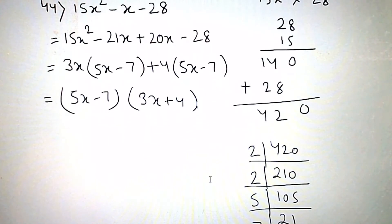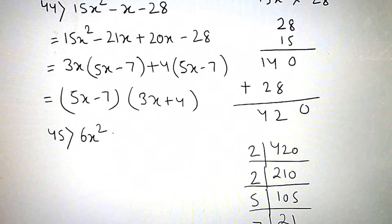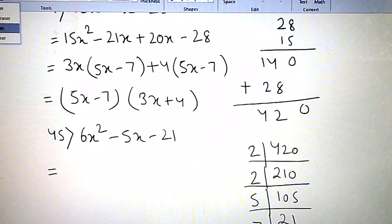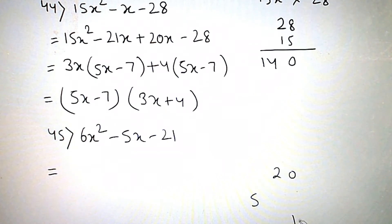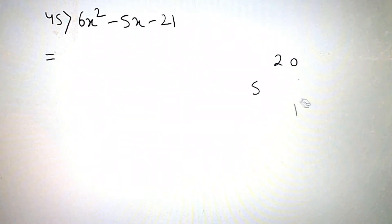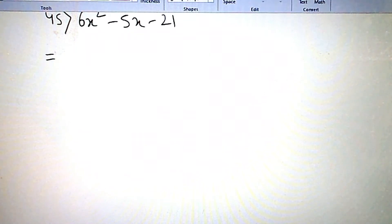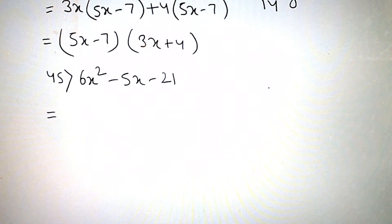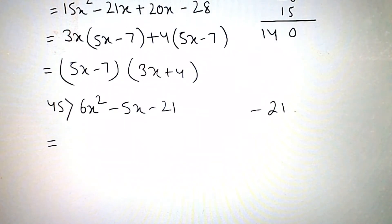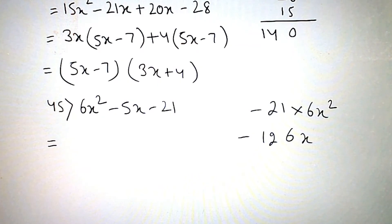Question number 45: 6x square minus 5x minus 21. Now multiply these two — minus 21 into 6 — so we get minus 126x square.